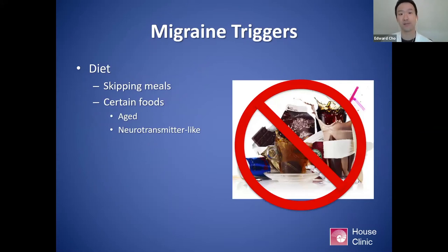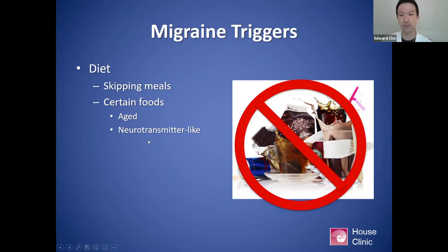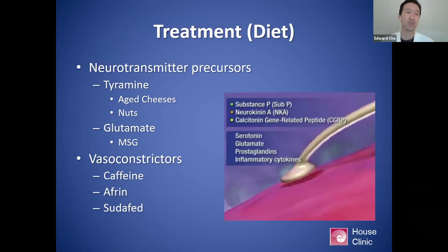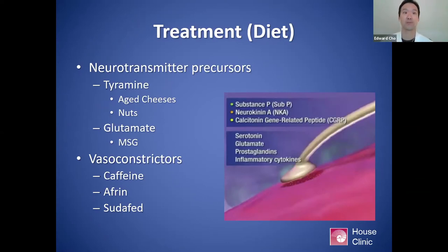Dietary triggers include skipping meals and certain food triggers. This is where we transition into treatment for vestibular migraine. The types of foods I look at are ones that may be aged or have characteristics that make them precursors for neurotransmitters. Diet is always an important thing to focus on. It's amazing how many patients have seen neurologists or other physicians and are started on medication when something like diet and supplements can be very effective. I've actually seen many patients where just the diet itself resolves their issues.